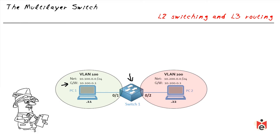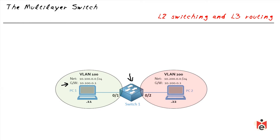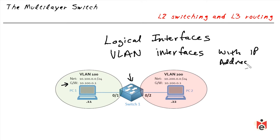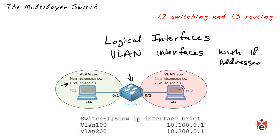Recall from a previous lesson that we created a VLAN interface to remotely manage a switch. We use that same logic here: we create VLAN interfaces on the switch — interface VLAN 100 and interface VLAN 200 — and assign them IP addresses. The VLAN 100 interface gets 10.100.0.1, and the VLAN 200 interface gets 10.200.0.1. The PCs are happy because they just forward traffic to their default gateway when packets need to leave the local subnet.